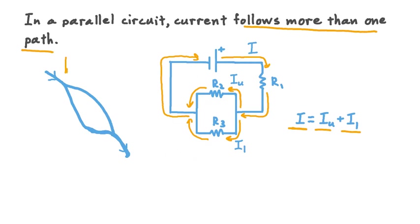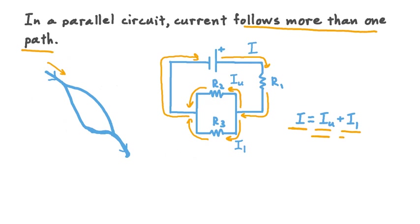That makes sense if we think about our flowing water analogy to parallel circuits. If we had a stream flowing along and it reached a branching point, the total water in the branches would have to add up to equal the total water in the stream to start with — the water in the branches has to come from somewhere upstream. In the same way, the currents flowing through the different branches of our parallel circuit have to add up to equal the total current that supplied those branches. This is true whether we have two branches, three, four, or any number of branches.